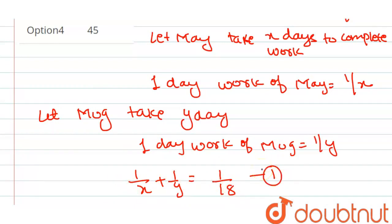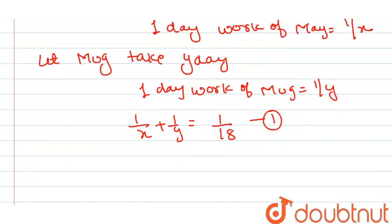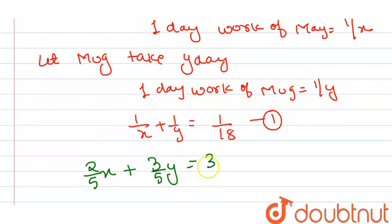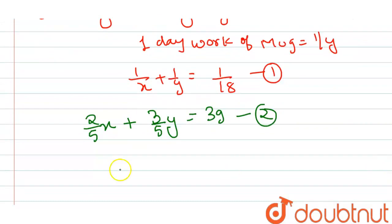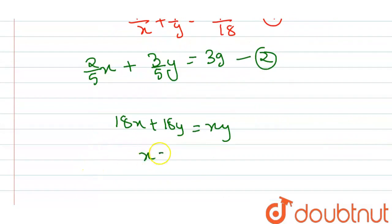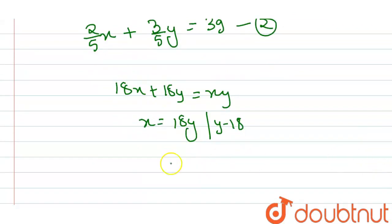ये हमारी first equation हो गई। Now, पहले Mayuri ने अकेले work किया, and then after completing two-fifth of the job, उसने job छोड़ दिया। उसके बाद Mugda ने काम किया। So, two-fifth work Mayuri ने किया plus three-fifth work Mugda ने किया, और ये value 39 के equal है। ये हमारी second equation है। जब first and second को solve करेंगे, तो expression आएगा: 18X + 18Y = XY। यहां से X की value आएगी: X = 18Y / (5Y − 18).